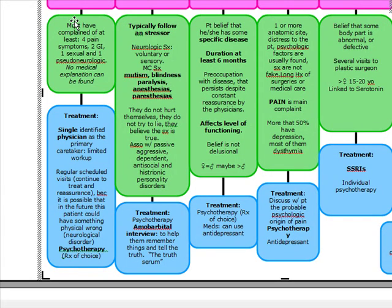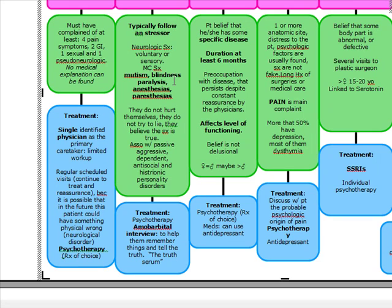Next is conversion disorder. It typically follows an acute stressor and involves one or two neurological symptoms affecting either the voluntary or sensory nervous system. On the test, it often presents as mutism, blindness, paralysis, anesthesia, or paresthesia.